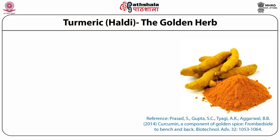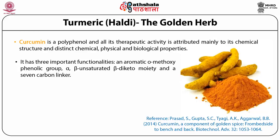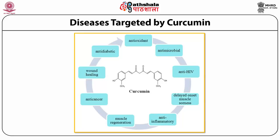Turmeric, commonly known as haldi, is the golden herb with many therapeutic properties established in the Indian traditional system. The bioactive responsible for rendering turmeric a healing herb is curcumin. Curcumin is a polyphenol and all its therapeutic activity is attributed mainly to its chemical structure and distinct chemical, physical, and biological properties. Structurally, curcumin has three important functionalities: an aromatic methoxy phenolic group, an alpha-beta unsaturated beta-diketo moiety, and a 7-carbon linker.